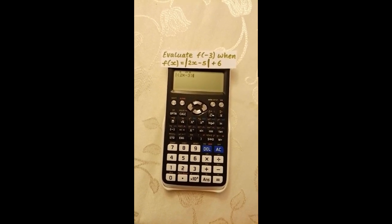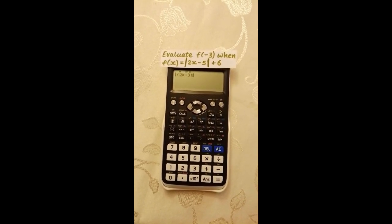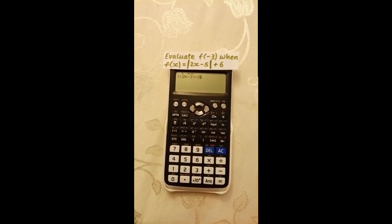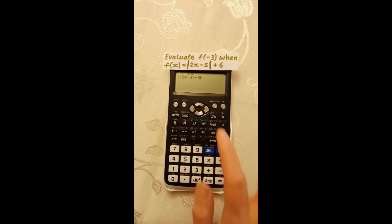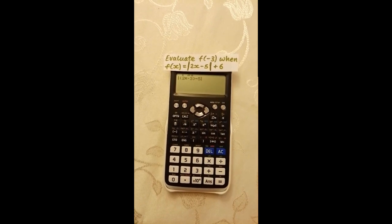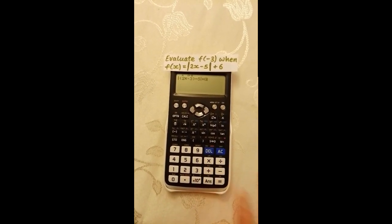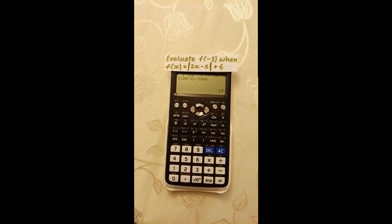The brackets are optional here because the calculator works using BIDMAS. Add 2, negative 5. Now move the cursor outside the right-hand modulus sign, then type in plus 6. To get the answer, press equals. And that's it.